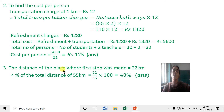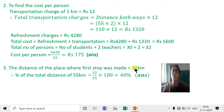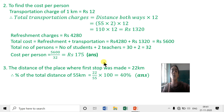Third: the first stop was at 22 kilometers from school. What percentage of the total distance of 55 kilometers is this? We calculate 22 out of 55 multiplied by 100. After simplification, 22 into 100 upon 55 gives 40 percent. So the stop is at 40 percent of the total distance.